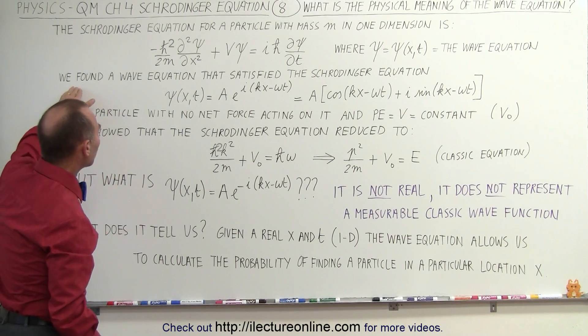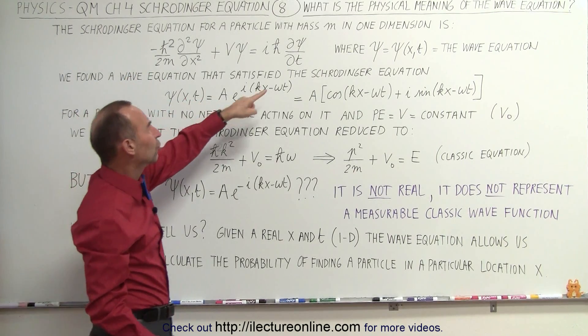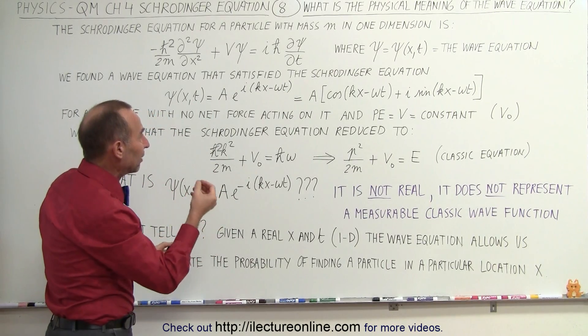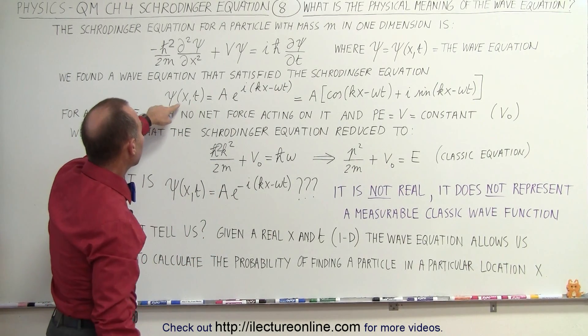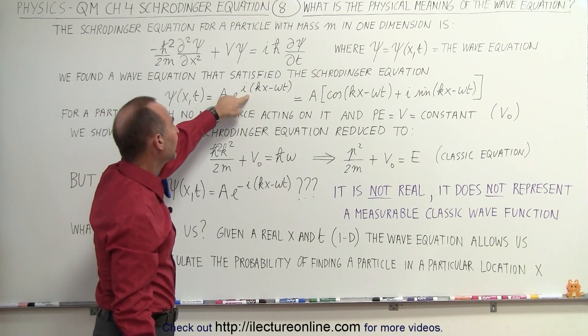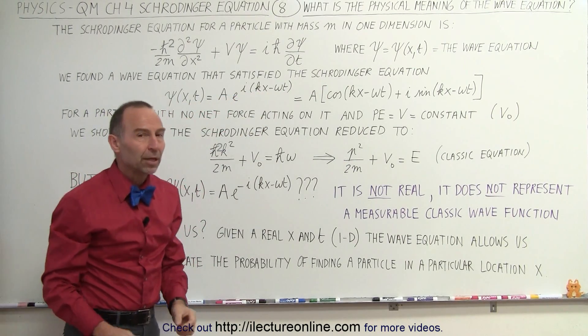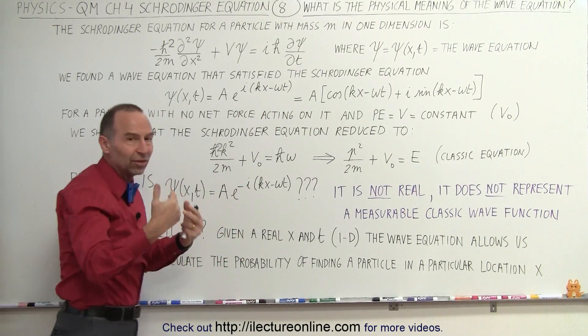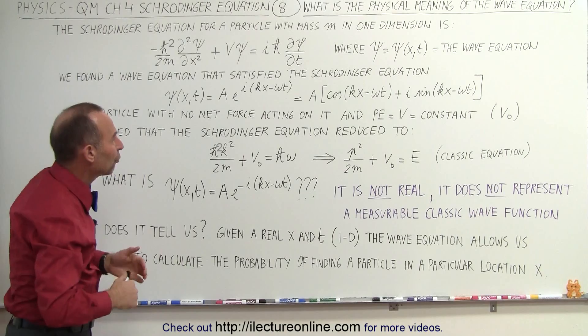We found a wave equation that satisfies the Schrodinger equation for a single particle in a single dimension environment. And here it is. We wrote it as some constant times e to the i kx minus omega t. Now the kx minus omega t looks very familiar. We can see that readily in any sort of wave equation.